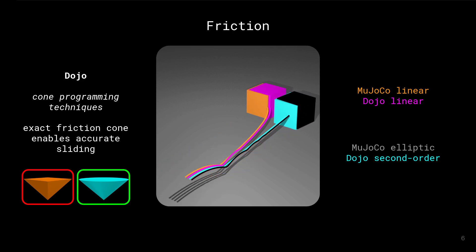DOJO can simulate the full non-linear friction cone, which gives the physically correct straight line motion. MUJOKO's elliptic friction cone projection approximates the true friction behavior well and only exhibits a minor rotational drift.